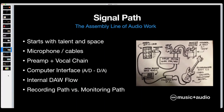Once you get it into the computer and into whatever software you're using, that software has its own internal signal flow. The signal comes in, maybe hits a gain stage, goes into a routing matrix, hits inserts where you could put a plugin, or auxiliary sends where you could send part of the signal to a different channel. Then it hits panning controls, solo and mute controls, before reaching the channel fader which sends the signal to the master stereo bus. These are all virtual components inside the computer, and knowing this helps you track down problems and troubleshoot issues.